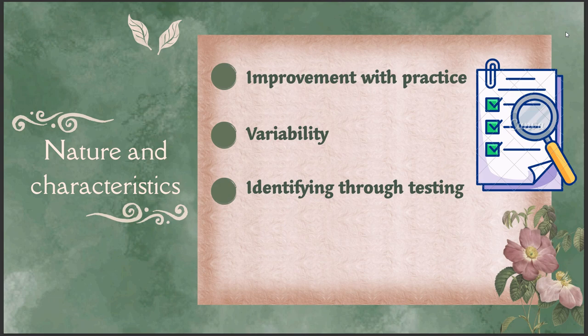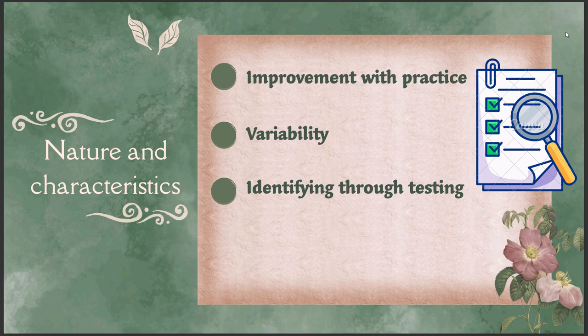Each person has aptitudes for different things — while some might have high aptitude for logical reasoning, they may not have aptitude for creative writing. Aptitude changes from person to person; one person might be good in writing, another in singing, another in music — that is the variability aptitude brings. Seventh, identification through testing — aptitudes can often be identified through specific tests designed to measure potential abilities in various fields, such as aptitude tests used in educational settings to guide students towards subjects or careers where they are most likely to excel.